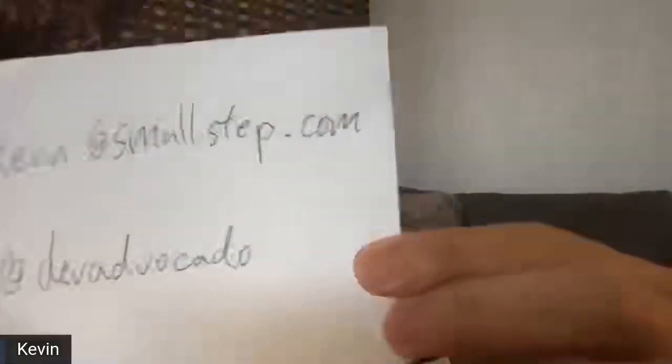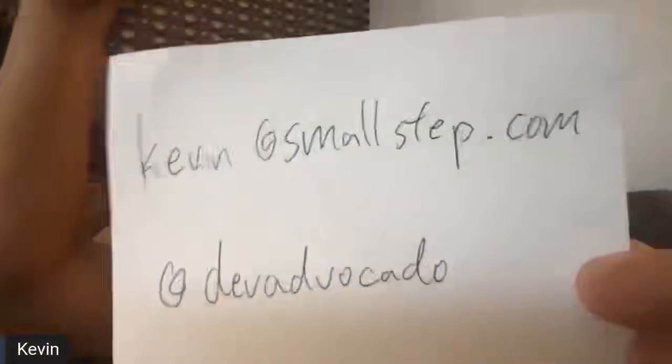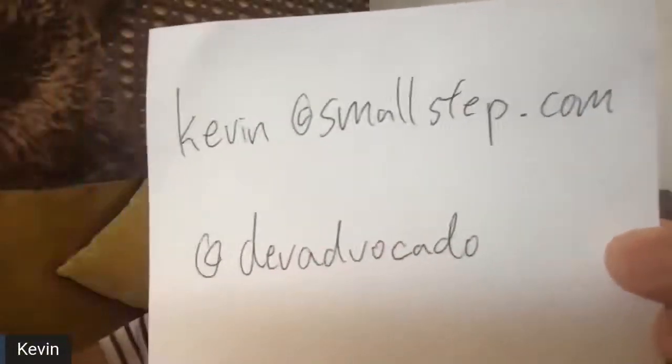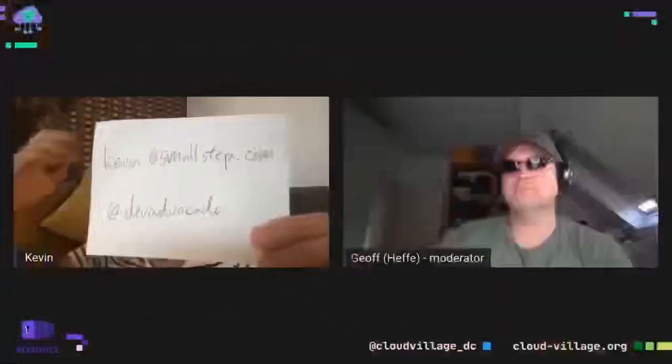What I want to sum up is: run your own internal PKI. Sorry for the screen share issues and having to rush through this. Check out GitHub — there are a lot of open source options, and SmallStep is a great one. If you have any questions, you can email me at kevin@smallstep.com, or find me on Twitter at devadvocato.